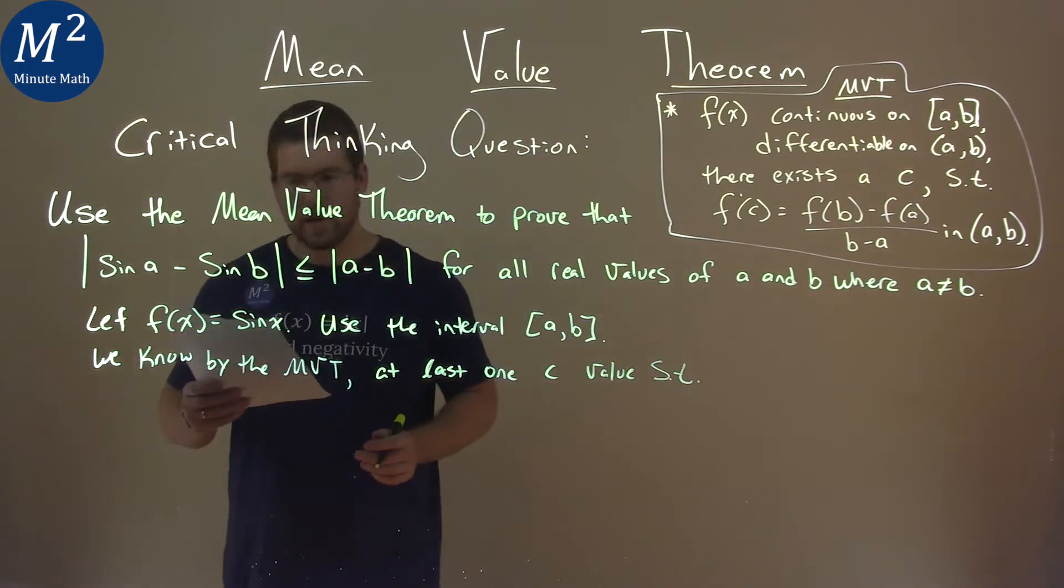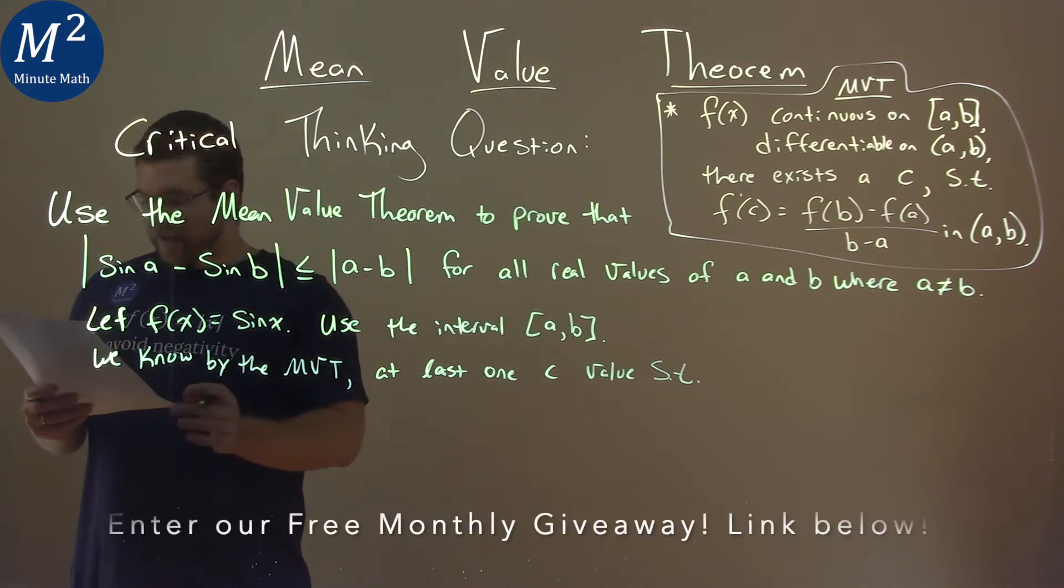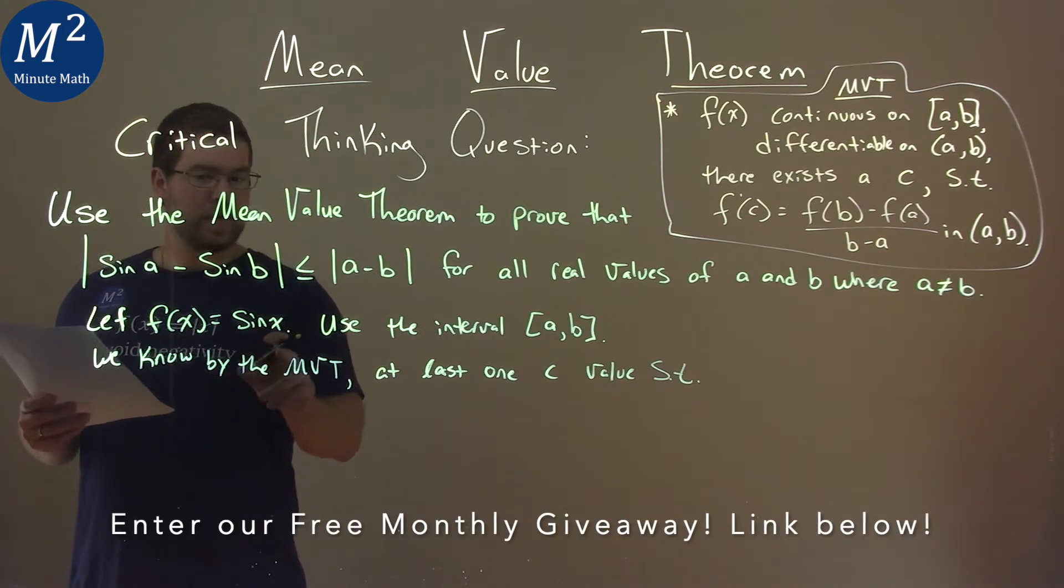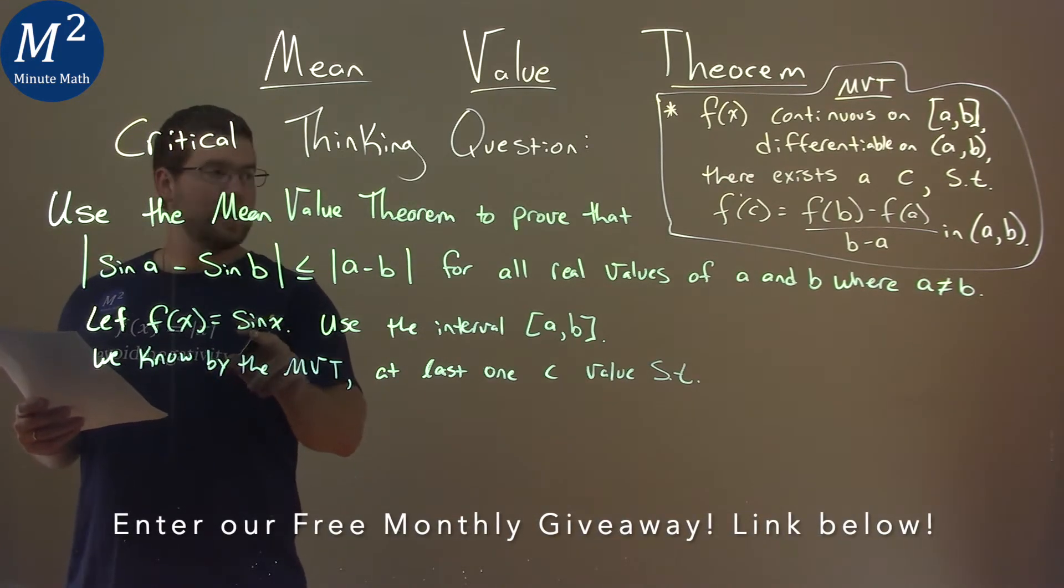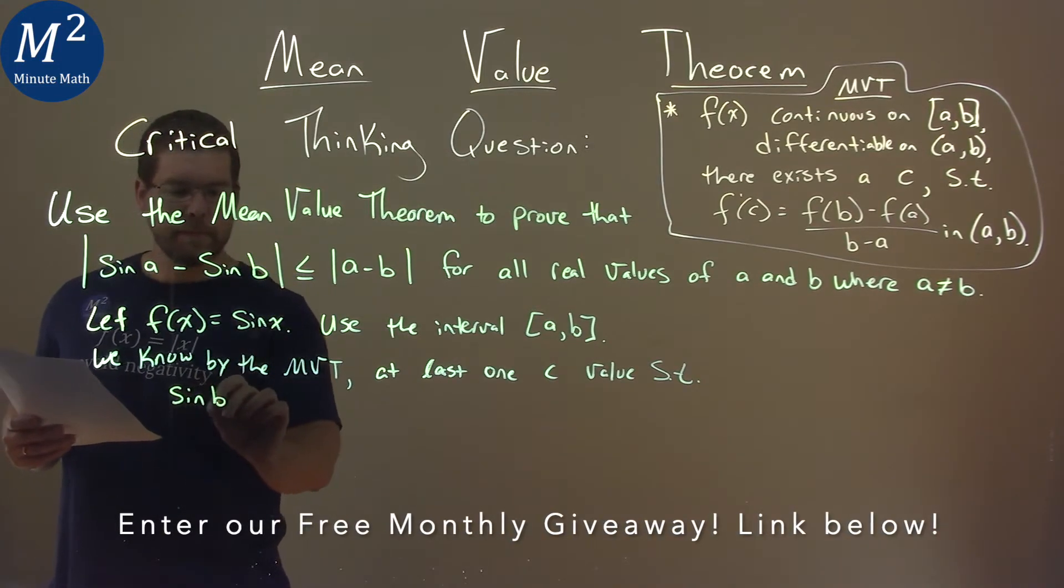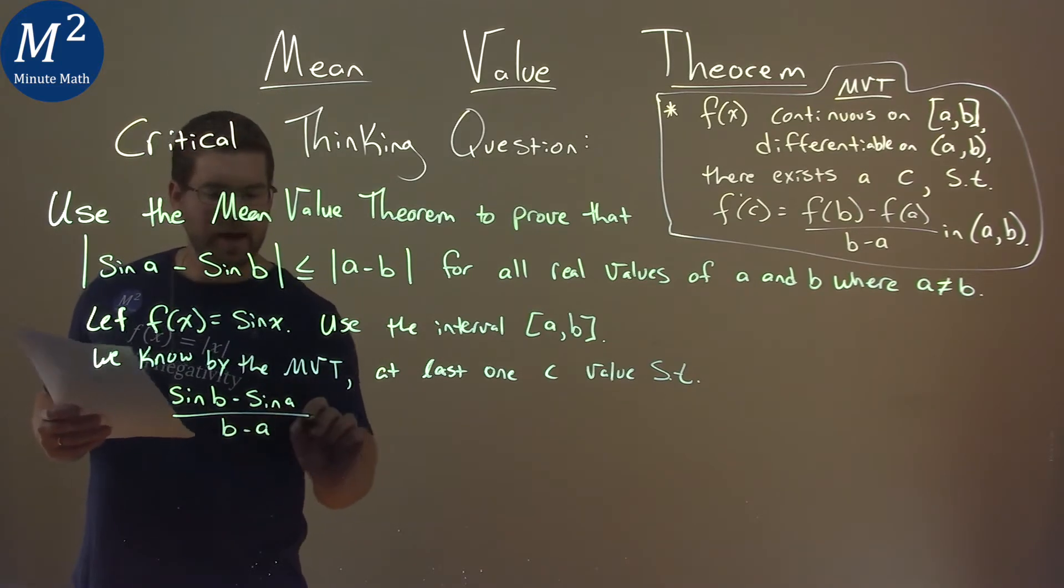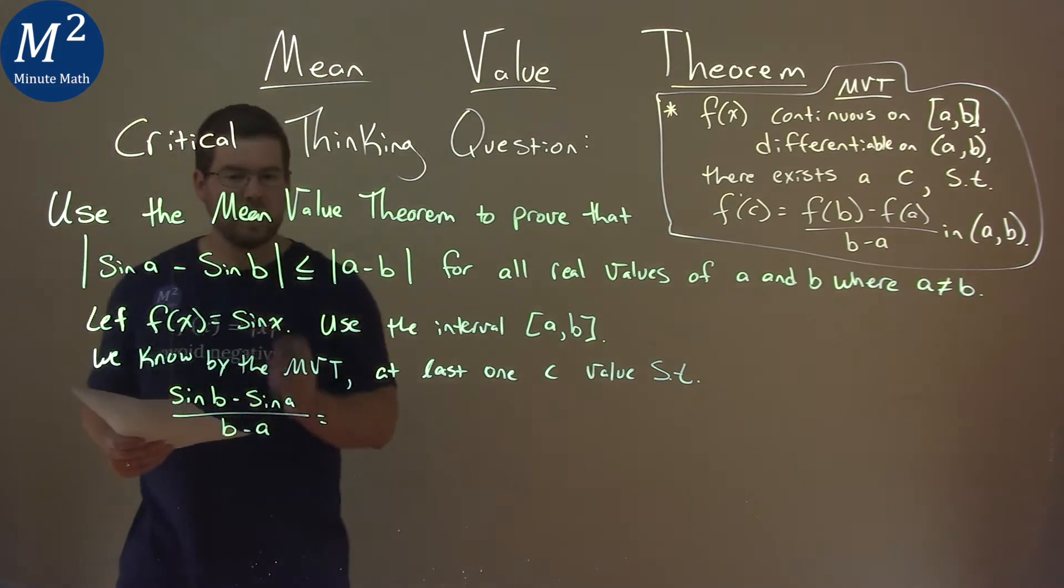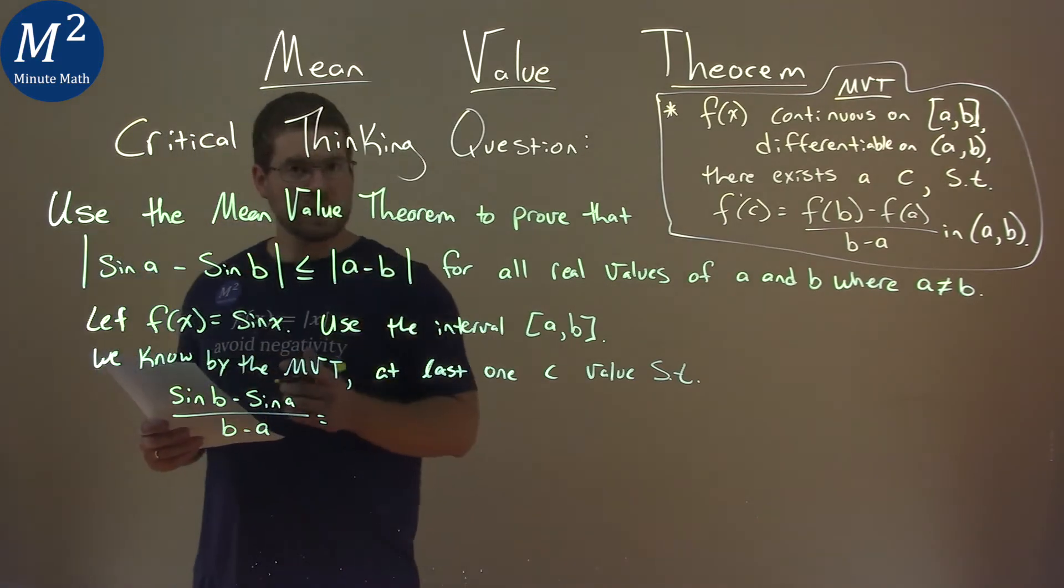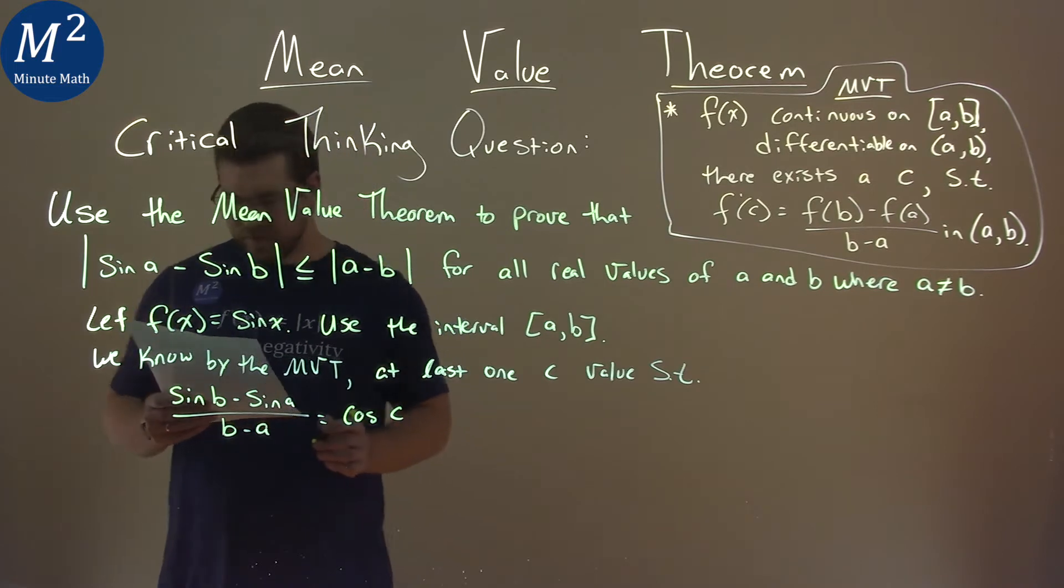Let's apply the Mean Value Theorem. The theorem states that F(B) - F(A)—so that would be sin B - sin A over B - A—equals the derivative of our function sin x, which is cosine at our value C, so cosine of C.